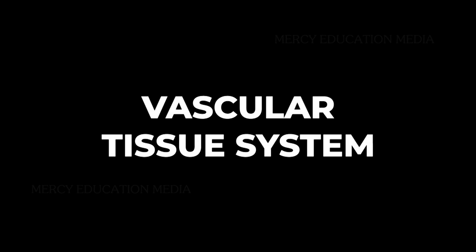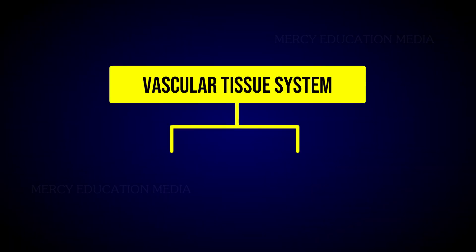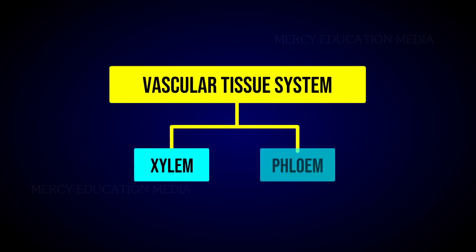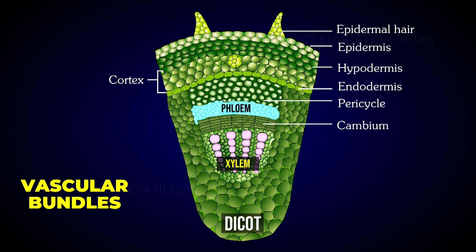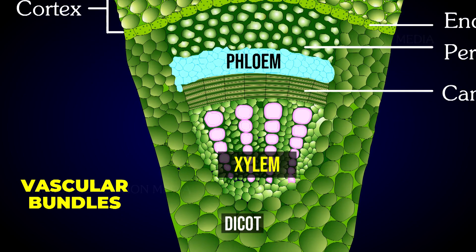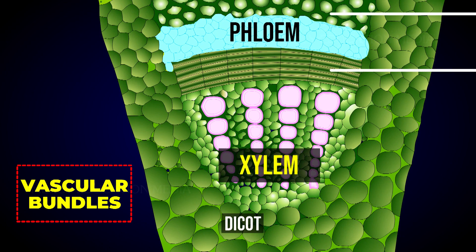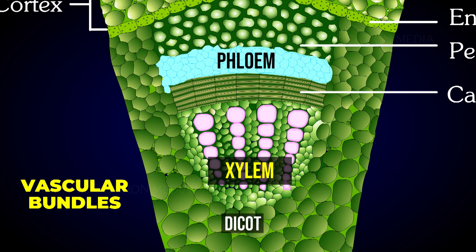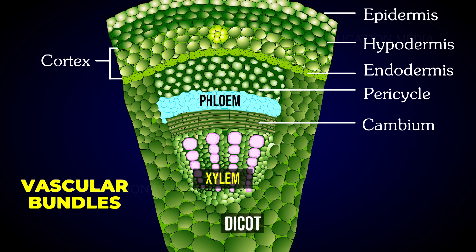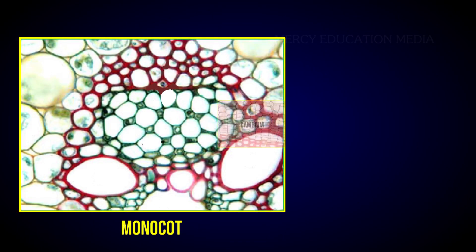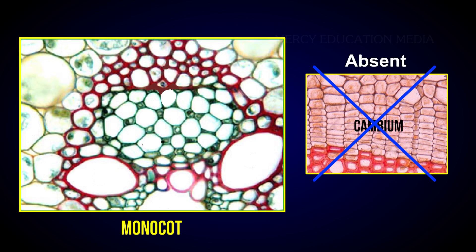The vascular tissue system consists of xylem and phloem. The elements of xylem and phloem are always organized in groups called vascular bundles. In dicot stem, the vascular bundle consists of cambium tissue in between xylem and phloem; such a vascular bundle is called an open vascular bundle. In monocot stem, cambium is absent in the vascular bundle, hence it is known as a closed vascular bundle.